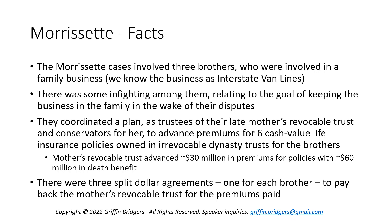Down the road, knowing that this generational transition was happening and that there could be estate tax issues at their mother's passing, the brothers coordinated a plan. Trustees of their mother's revocable trust — she was living at the time — set up six cash value life insurance policies, each with a death benefit of about $10 million, owned in irrevocable dynasty trusts, one for each brother. The mother's revocable trust advanced $30 million in premiums for those policies, which had $60 million in death benefits combined. They set up three split-dollar agreements, one per brother, to pay back the revocable trust the lesser of the premiums paid or the cash value of the policies upon a brother's death.